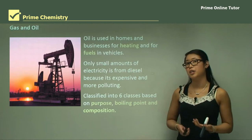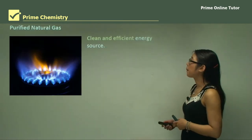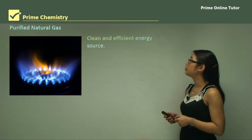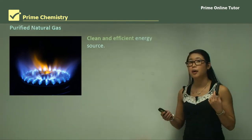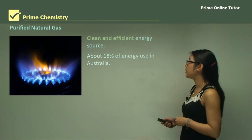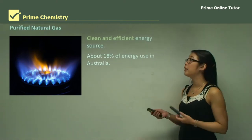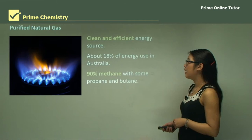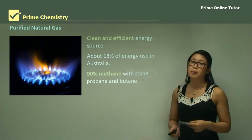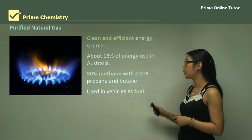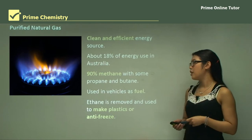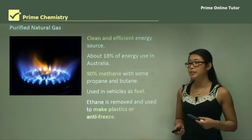So what kind of hydrocarbons are in there? Another one is purified natural gas. It's a clean and efficient energy source because it combusts completely. About 18% of energy use in Australia is from purified natural gas, of which 90% is methane with some propane and some butane. It can also be used in vehicles as a fuel, and ethane is removed and used to make plastics or antifreeze.